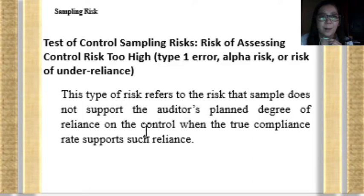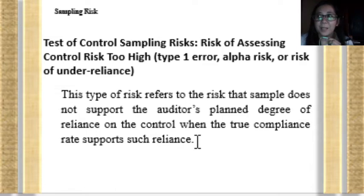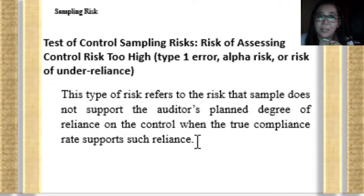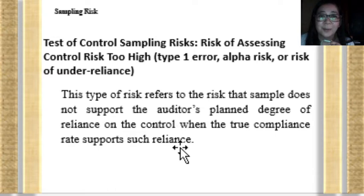This type of sampling risk refers to the risk that the sample does not support the auditor's planned degree of reliance on the internal control when the true compliance rate actually supports such reliance. In other words, the auditor planned to rely on the internal control of the entity; however, based on the assessment process, it was found that the internal control is not effective, so he assessed it as having high risk — when in fact, the true compliance is that the internal control is effective.